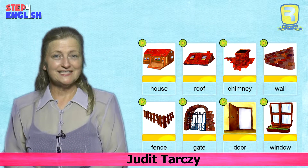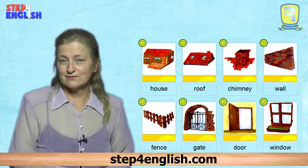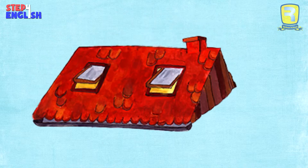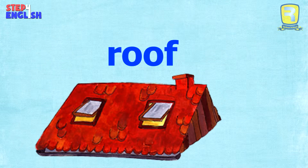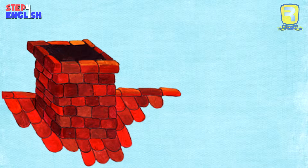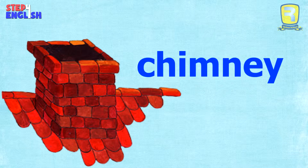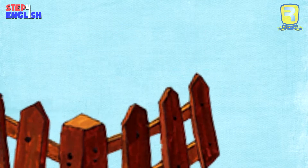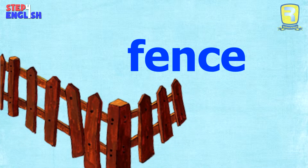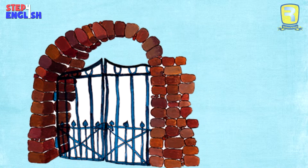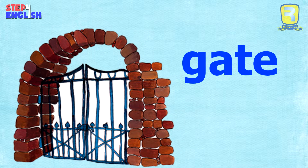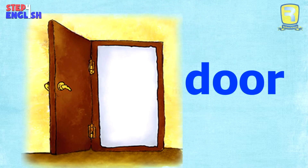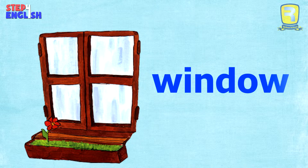Let's see another word board. This is about the parts of the house. House, roof, chimney, wall, fence, gate, door, window.